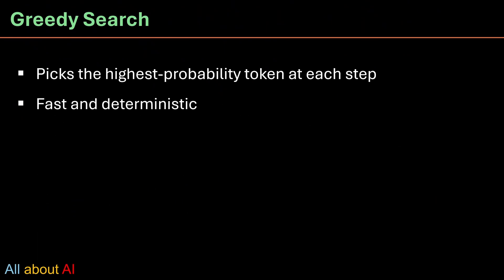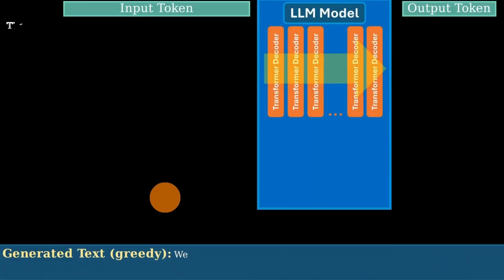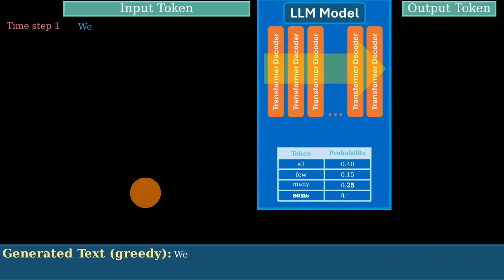First we will start with greedy search. Greedy search is like choosing the most obvious next word. No randomness and it's great when speed matters. It's simple and when you want consistent output, this is the method we need to use. But the downside is often repetitive and boring like a robot stuck in a loop. So for task like classification or basic QA, it gets the job done. So short factual task, it's the go to approach.